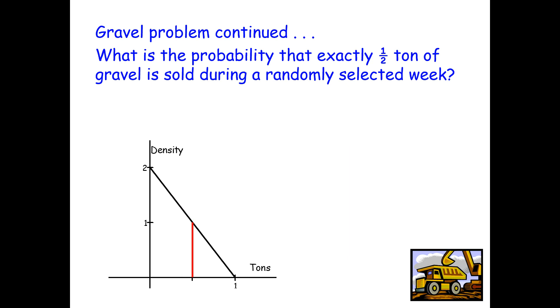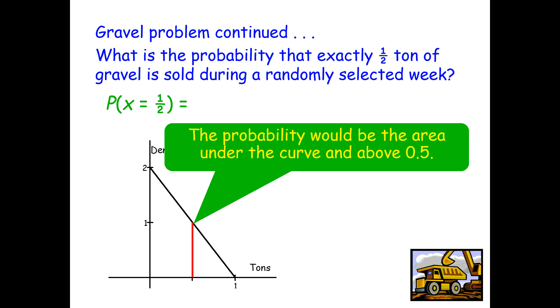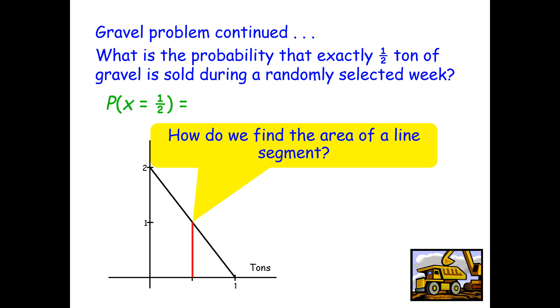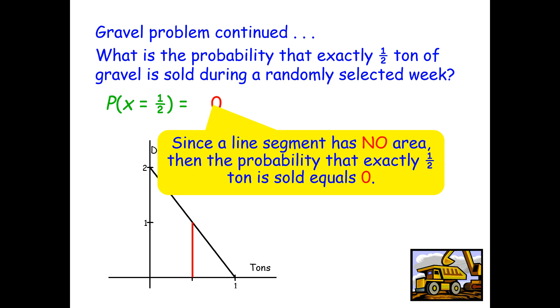What is the probability that exactly 1 half ton of gravel is sold during a randomly selected week? If we have the probability that x equals 1 half, we end up with just this line segment at the 1 half. But how do we find the area of a line segment? You can't. So this probability is 0. Since the line segment has no area, the probability that exactly 1 half ton is sold equals 0.